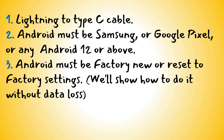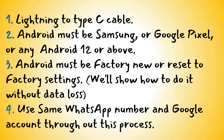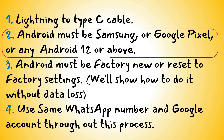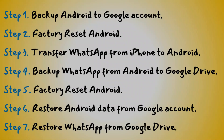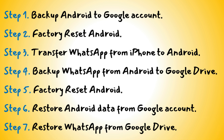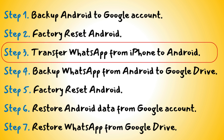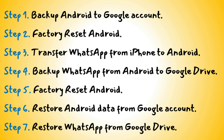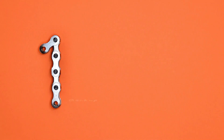The Android device must be factory new or reset to factory settings. In case you already have data in your Android, no worries — we'll show you how to complete this transfer without losing data and apps. Please use the same WhatsApp number and Google account throughout the process. If you don't have one of these supported Android phones, you can borrow a supported phone from a friend and complete steps one to six, then follow step seven on your own Android phone. Others setting up a factory new Android device can skip directly to step three.